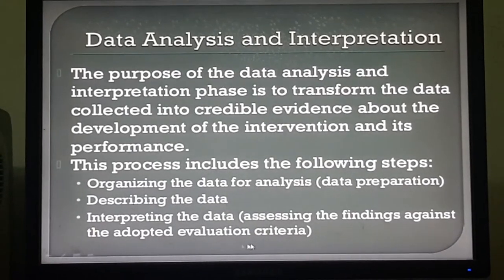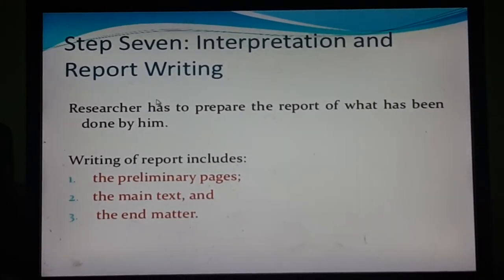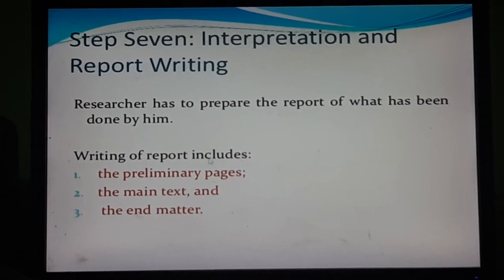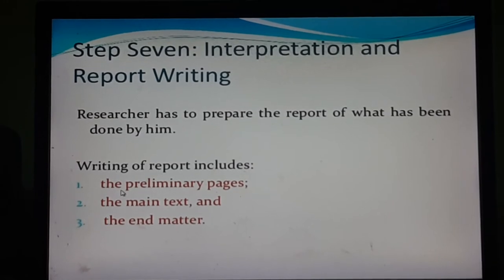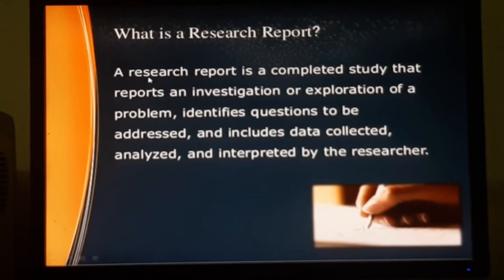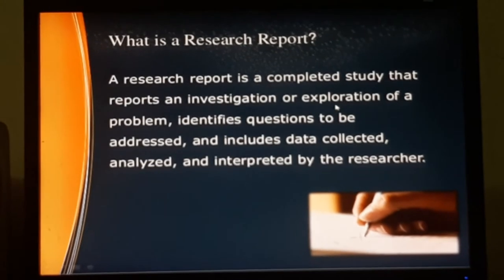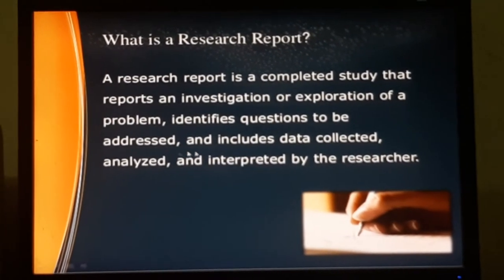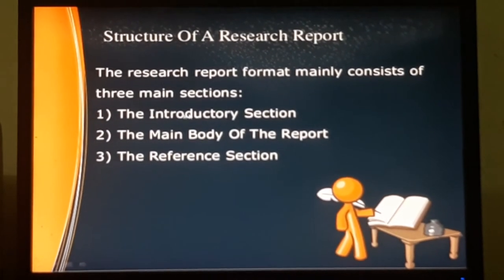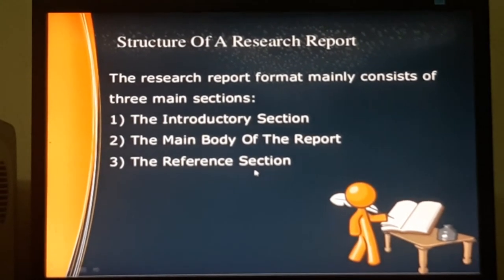The seventh and last step of the research process is interpretation and report writing. The researcher has to prepare a report of what has been done. Writing of a research report includes three main aspects: the preliminary pages, the main text, and the end matter. A research report is a completed study that reports an investigation or exploration of a problem, identifies questions to be addressed, and includes data collected, analyzed, and interpreted by the researcher. The research report format mainly consists of introductory sections, the main body, and appended or reference sections.